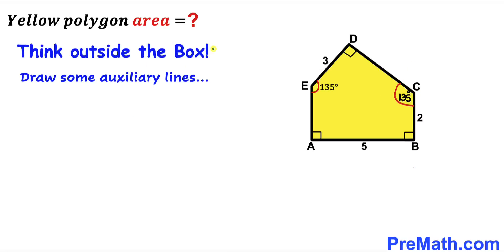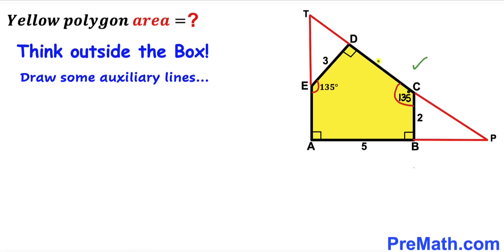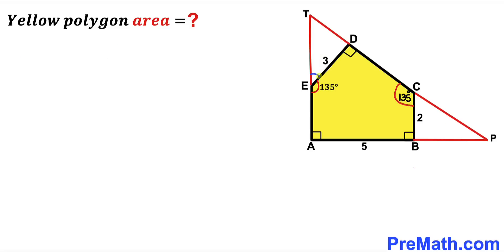Now we are going to think outside the box and draw some auxiliary lines. We extend line CD to point P on one side and point T on the other side. This gives us two triangles: triangle TDE and triangle PBC. We observe that since the straight angle is 180° and angle AED is 135°, the adjacent angle must be 45°. With the 90° angle and 45°, the remaining angle in each triangle is also 45°.